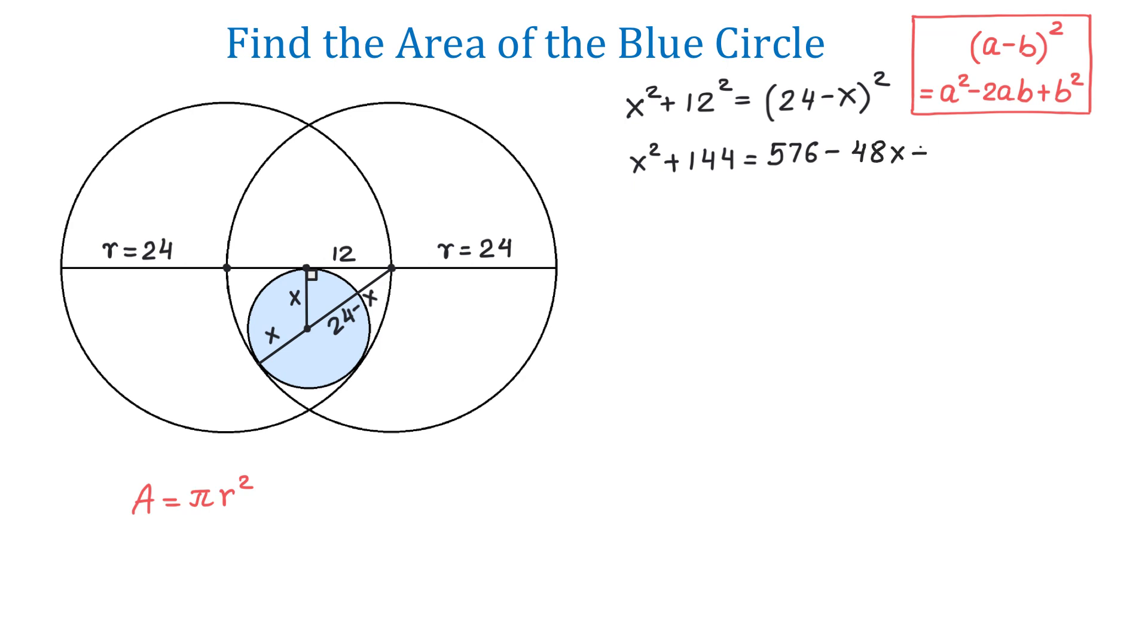And now, we need to raise x to the second power. Now, notice that on both sides, we have the same term x squared, and we will cancel it. Then, we will have 144 equals 576 minus 48x.